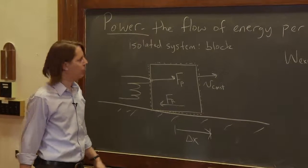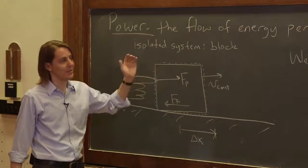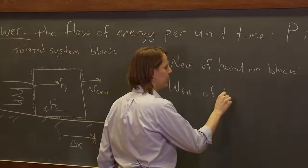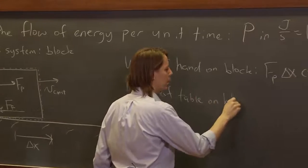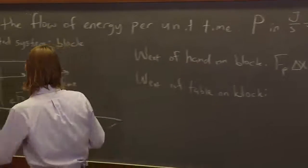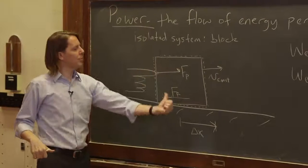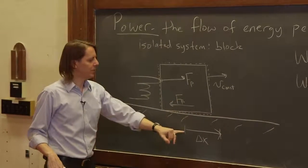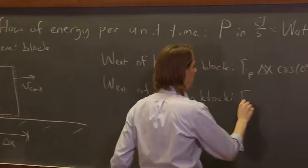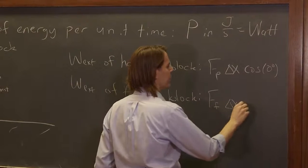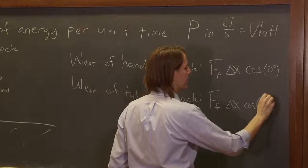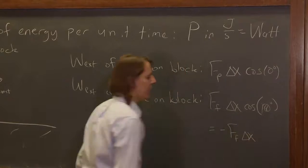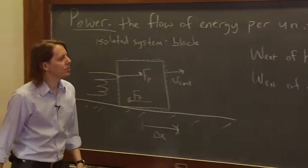So it must be increasing the energy of this system because we have positive external work. We could also look at the external work of the table on the block. If it's going at constant velocity, whatever force going this way must be balanced by friction. So it's just this force of friction times delta x, Ff times delta x. But those are in the opposite direction, 180 degrees. So this one equals minus the magnitude of the force of friction times the magnitude of delta x. That one comes out negative.